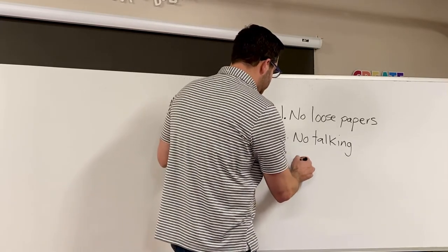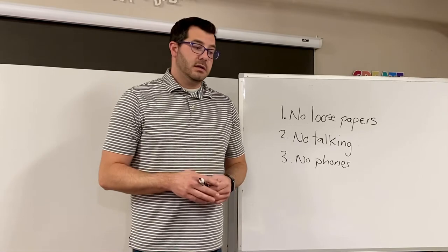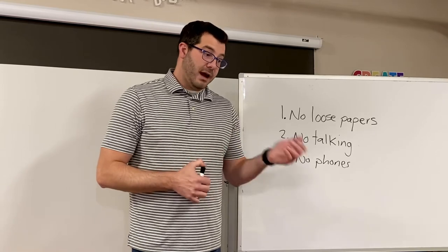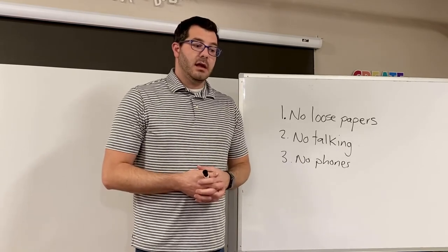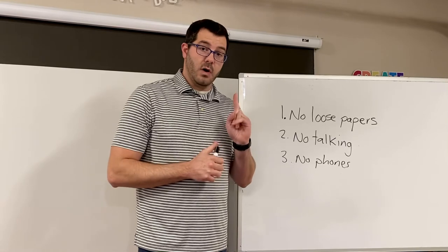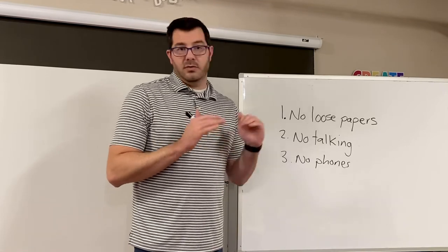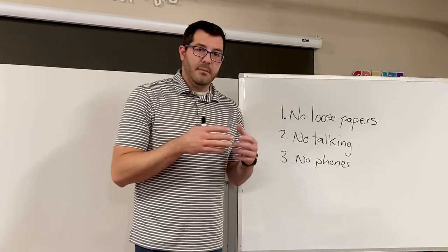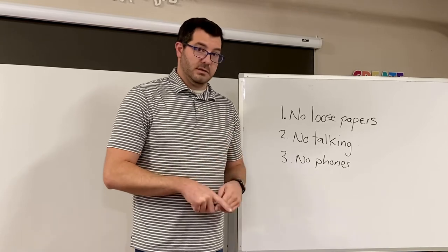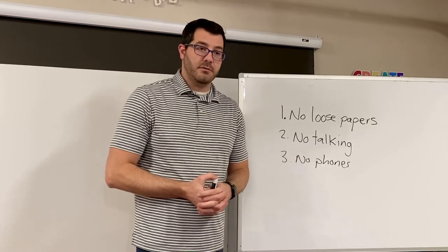Three, no phones. If you are caught looking at your phone, you get a zero and it doesn't matter what you're doing. I personally had given someone a zero and they were just looking at the time. There's a clock on the wall. You can look at the time on the clock on the wall. If you look at your phone for any reason, someone texts you, which they shouldn't be, but if you're looking at phone, period, you'll get a zero whether someone else snitches on you or the sub sees it. There's no reason to be on your phone during a test.